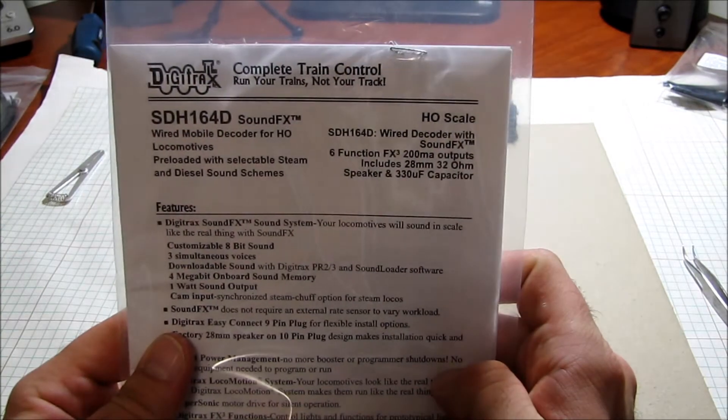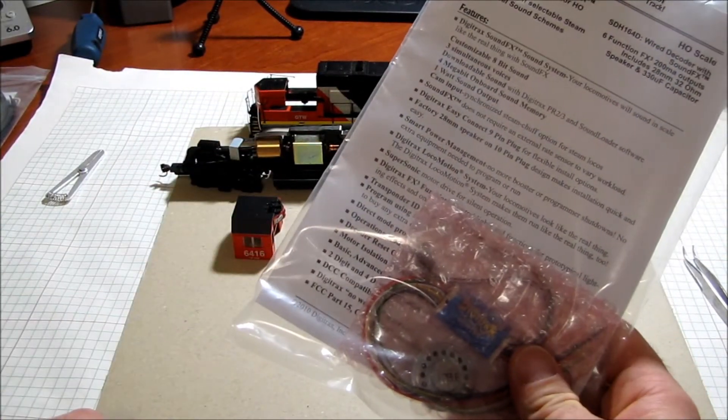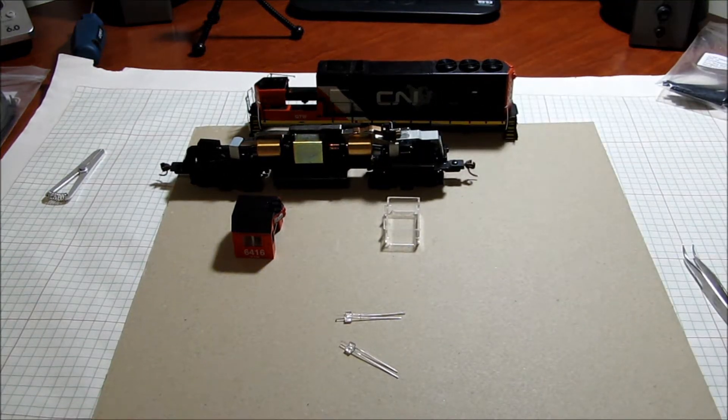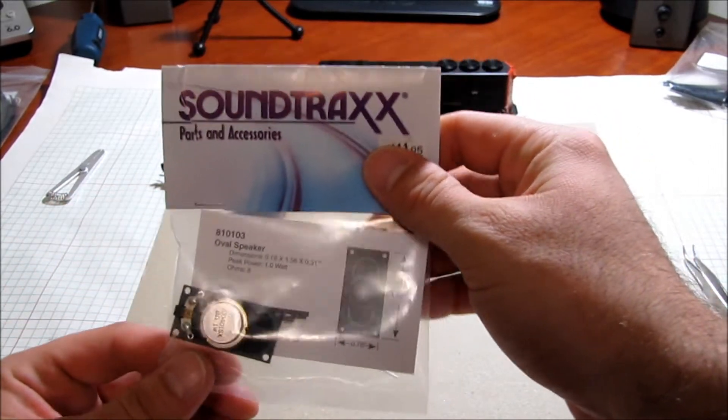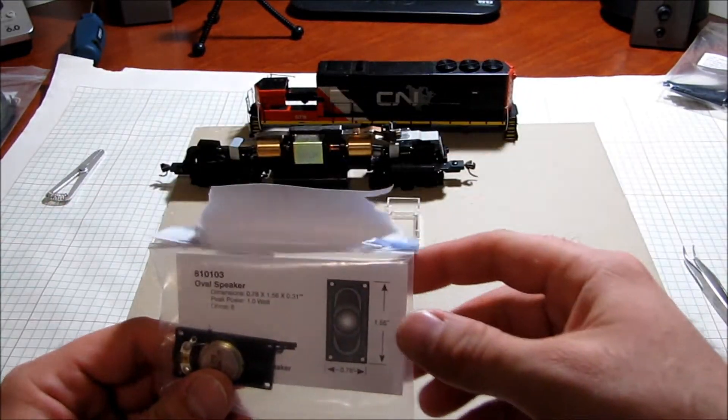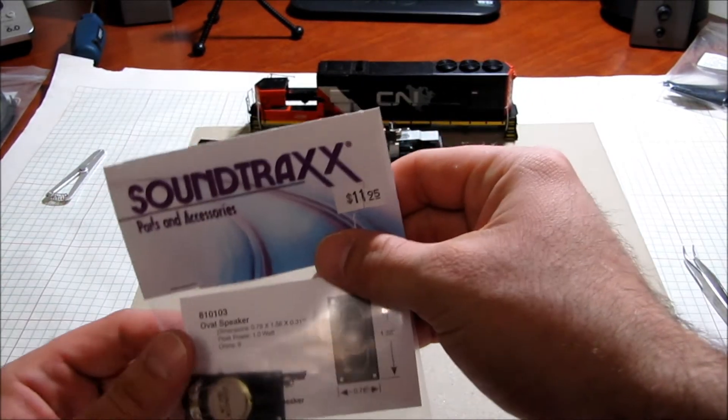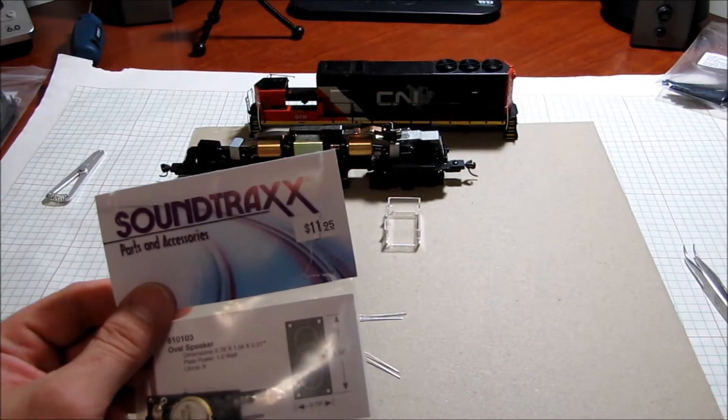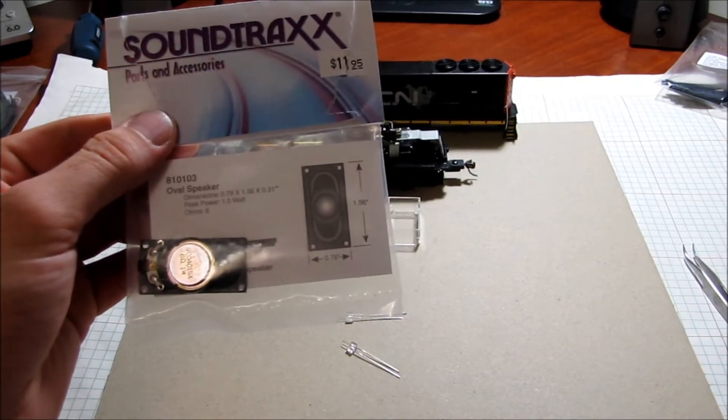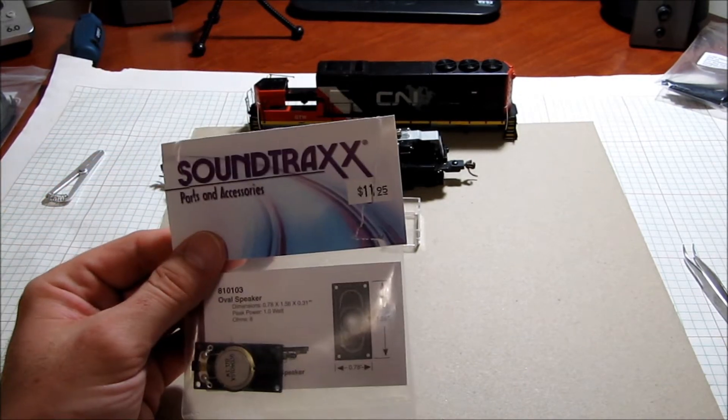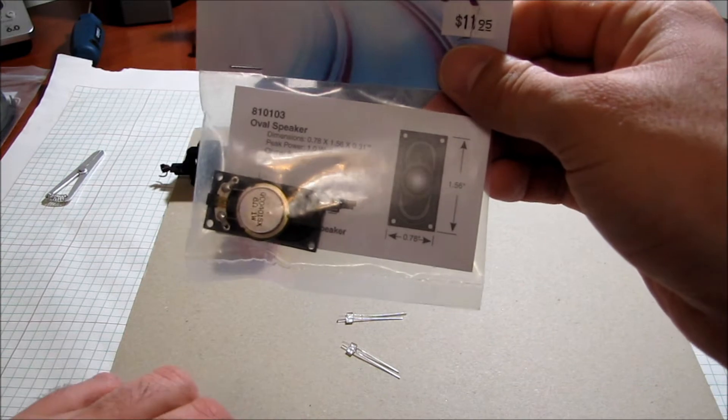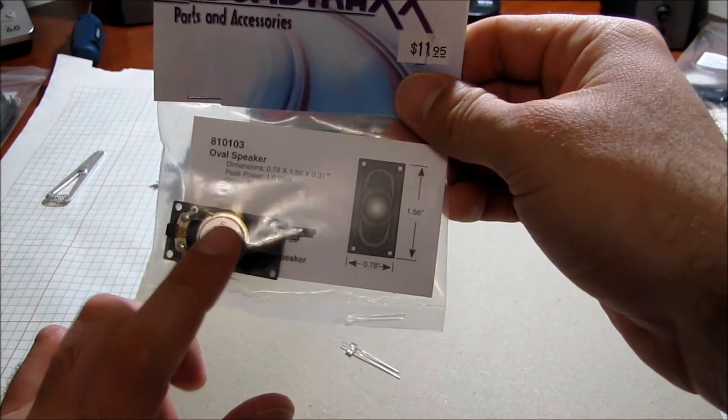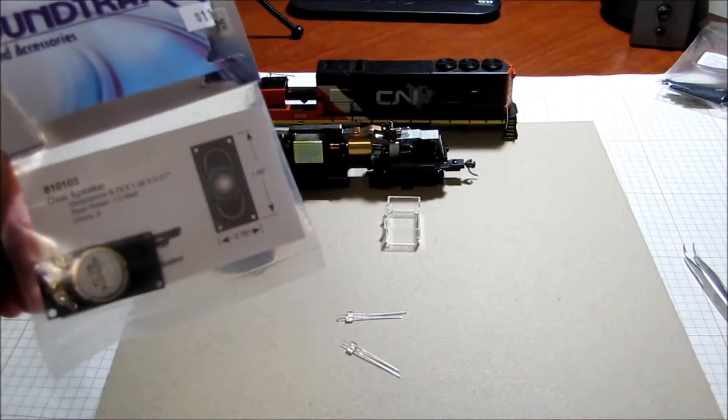That's why I bought the Soundtraxx small oval speaker. In the last video I made, I mentioned this one's a small oval speaker. In fact, what Soundtraxx offers is three different types of small oval speaker, and this one's actually the largest one. So this one is too big to fit inside the shell.